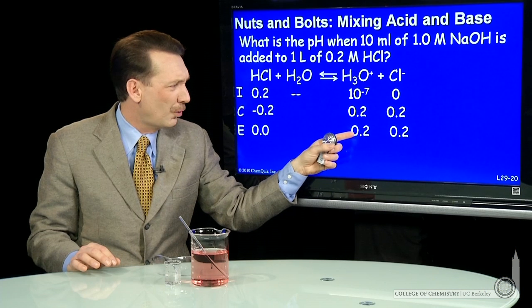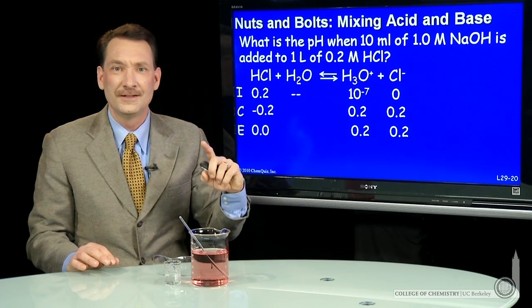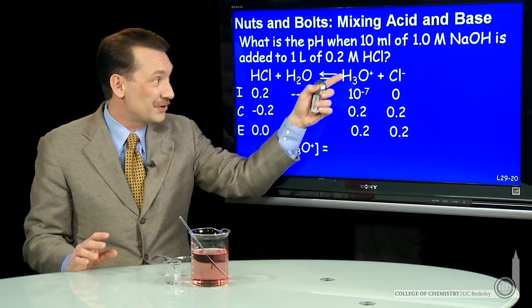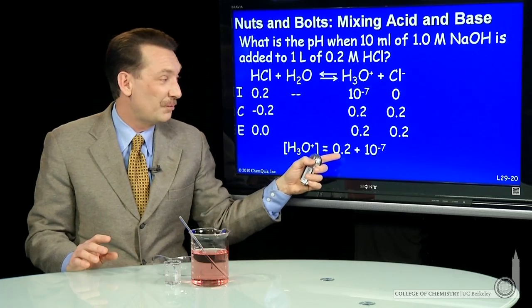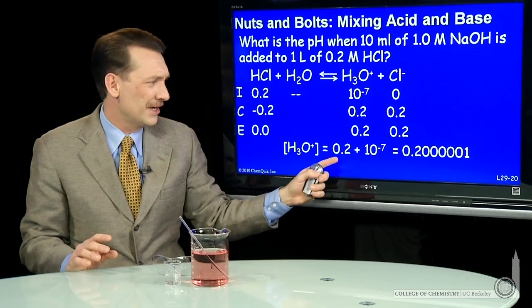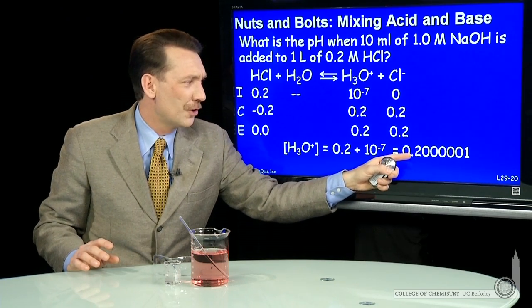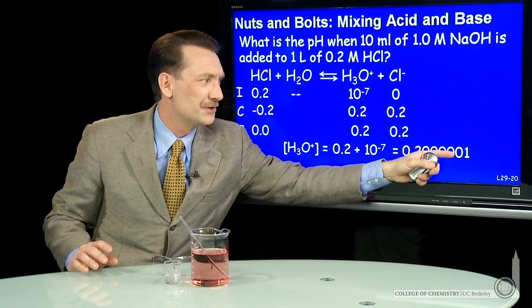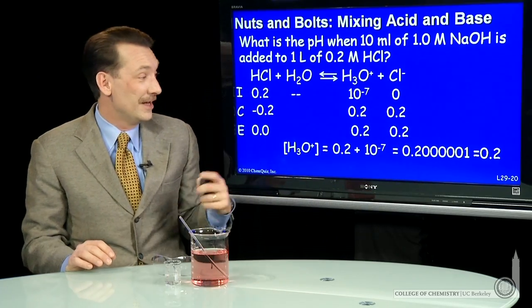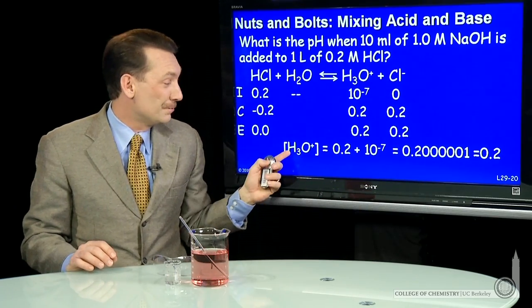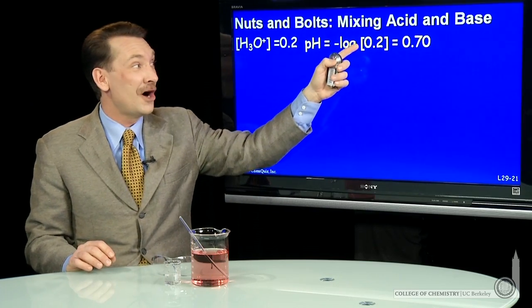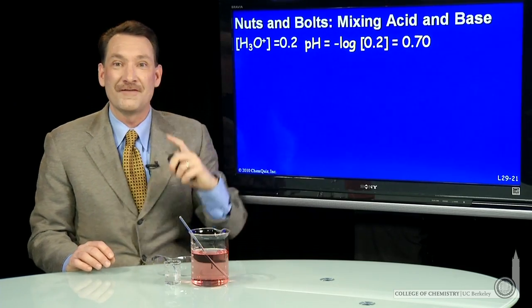Now, notice here I'm not writing 0.2 plus 10 to the minus 7. I could, but it doesn't make much sense. The H3O plus concentration of 0.2 plus 10 to the minus 7th, 10 to the minus 7th is tiny by comparison. This is 0.2000001. So that's essentially 0.2. So the pH is minus log of 0.2. I can say minus log the H3O plus concentration is 0.7.